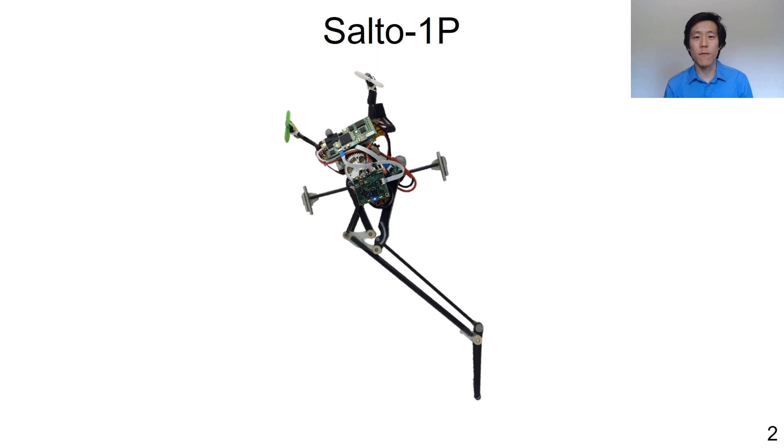Salto 1P is about 30 centimeters tall when fully extended, and it has a 15 centimeter long leg. It weighs about 100 grams altogether.